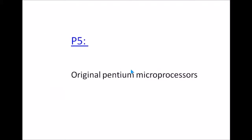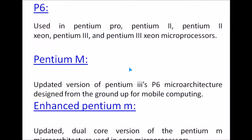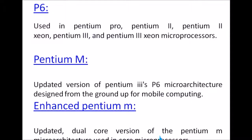The P5 was the original Pentium processor microarchitecture. P6 was used in the Pentium Pro, Pentium 2, Pentium 2 Xeon, Pentium 3, and Pentium 3 Xeon. The Pentium M was an updated version of the P6 microarchitecture, designed from the ground up for mobile computing. The Enhanced Pentium M was an updated dual-core version of the Pentium M microarchitecture, used in Core microprocessors.